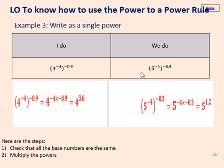For the we-do: 5 to the power of negative 4, all raised to the power of negative 0.3. Doing negative 4 times negative 0.3 gives a positive 1.2, so our answer is 5 to the power of 1.2. Really well done if you got that right.